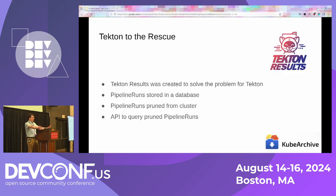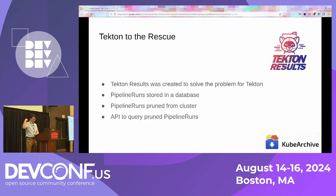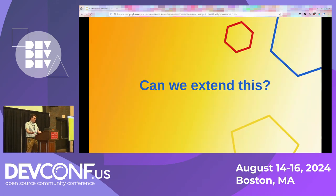This is a problem the Tekton community realized, and they came up with Tekton Results. What Tekton Results does is let you tell it: when my pipeline run or task run finishes, store the object in a database and then remove it from the cluster. This frees up space on the cluster to run workloads that are actively providing value, and you're using the best tool for the job — in 2024, something like a SQL database such as Postgres, where you can store potentially petabytes of data instead of only 8 gigabytes.